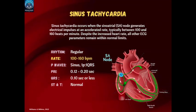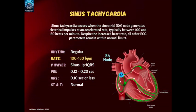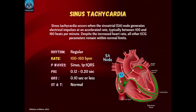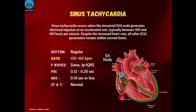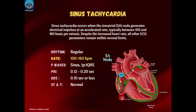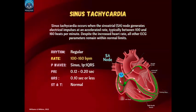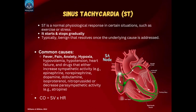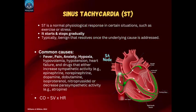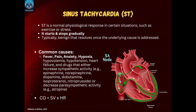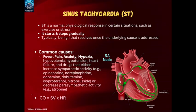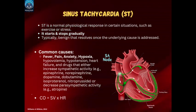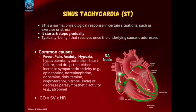Sinus tachycardia occurs when the SA node generates electrical impulses at an accelerated rate, typically between 100 to 160 beats per minute. Despite the increased heart rate, all other ECG parameters remain within normal limits. Sinus tachycardia is a normal physiological response in certain situations, such as exercise or stress. It starts and stops gradually, is typically benign, and resolves once the underlying cause is addressed.